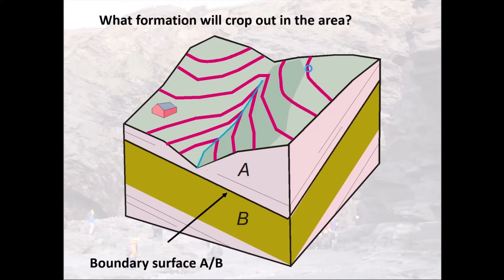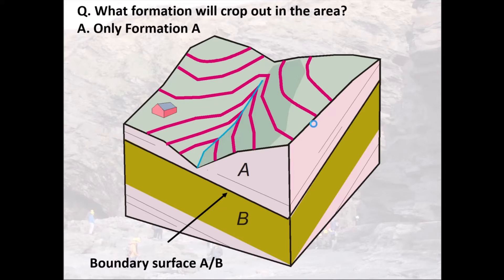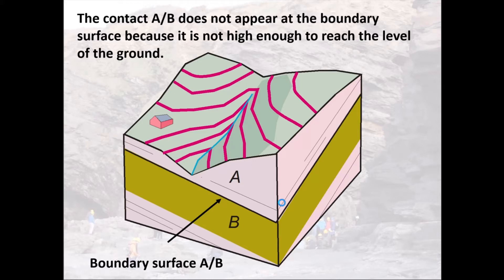If we look at this block diagram as our entire universe, which formation will crop out — A, B, or A and B? Well, if you look at the map, A is the only formation that will ever crop out in this area. The reason B never crops out is that the contact between A and B is always lower down than the ground. Its height is always less than the ground itself — in other words, the structural contours of that plane AB are always less than the ground contours.